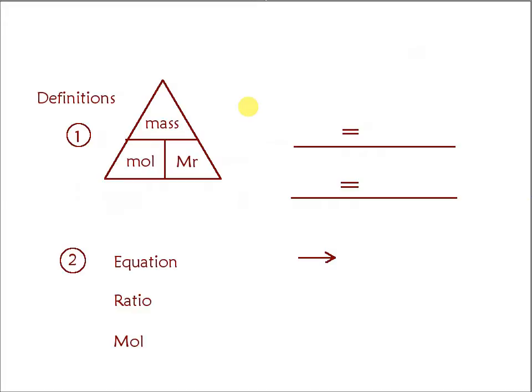Just to clarify how we can interconvert mass, mole, and MR, we can put them in a triangle like this where the amount in mole is equal to the mass divided by the relative mass of the compound.